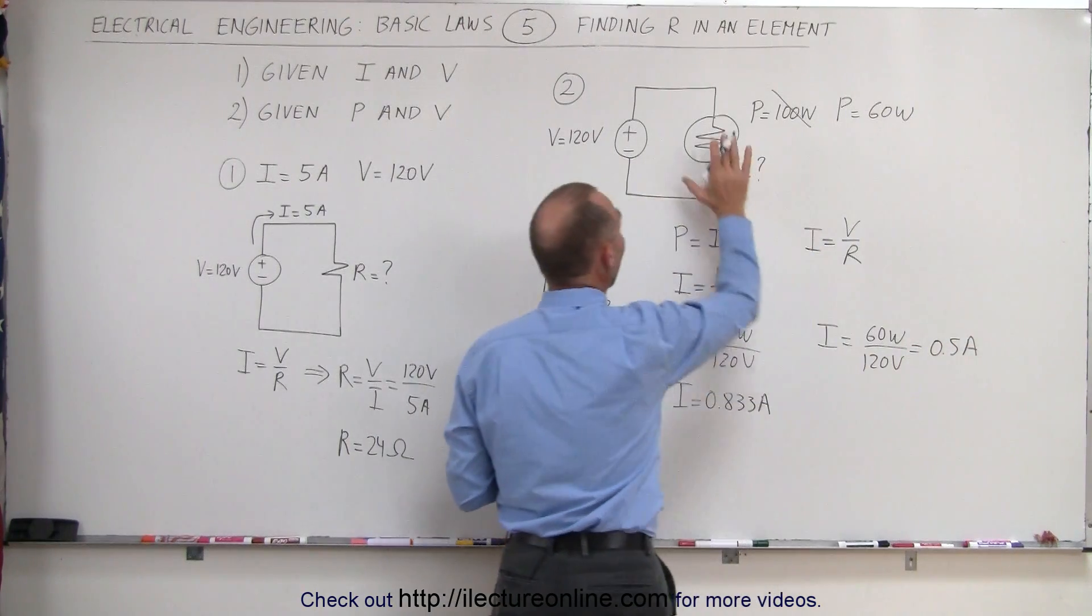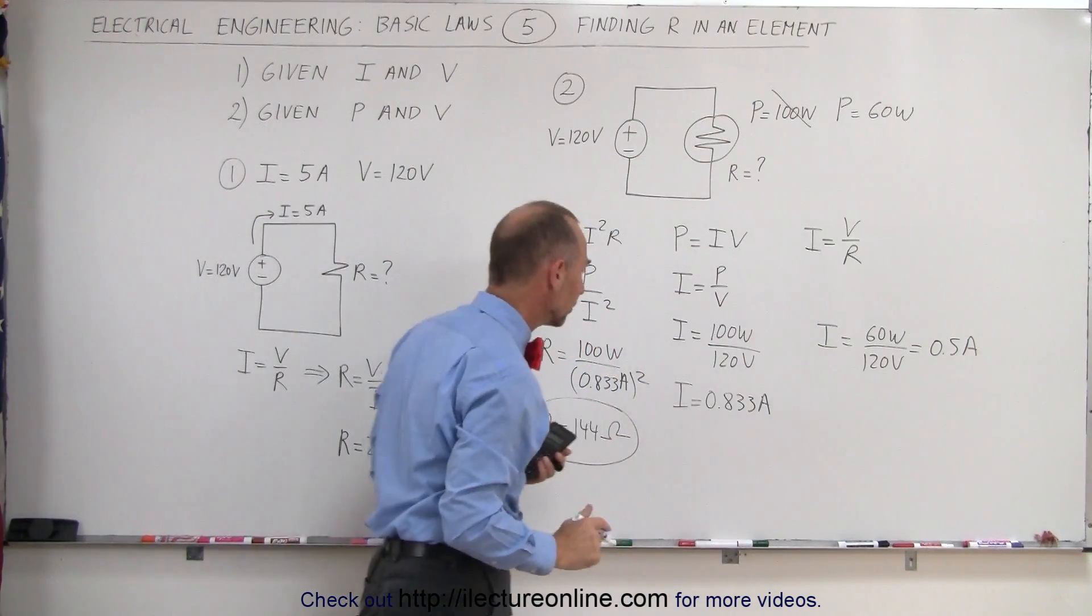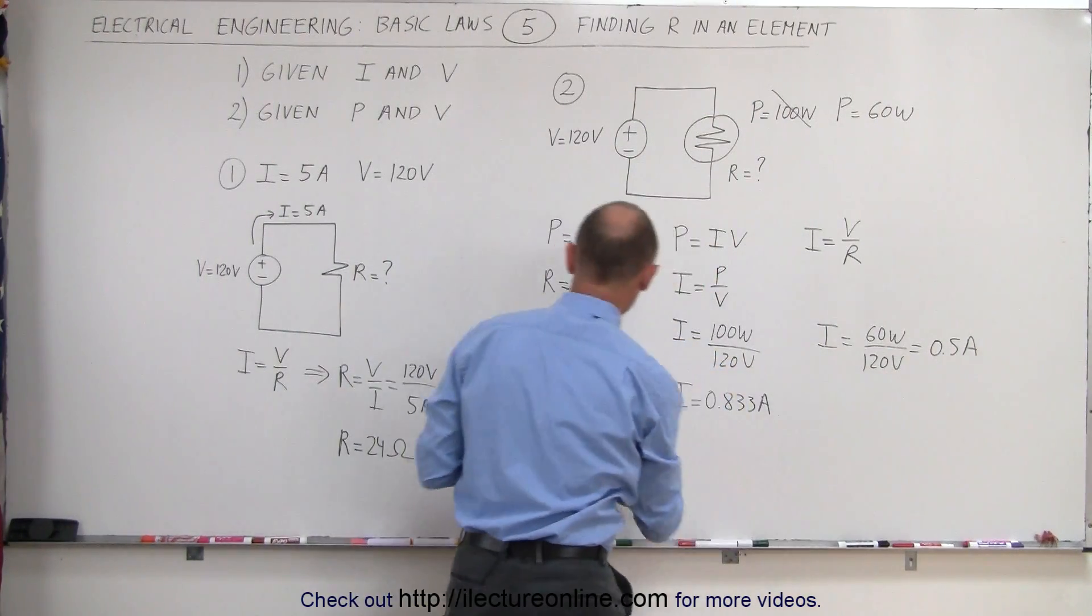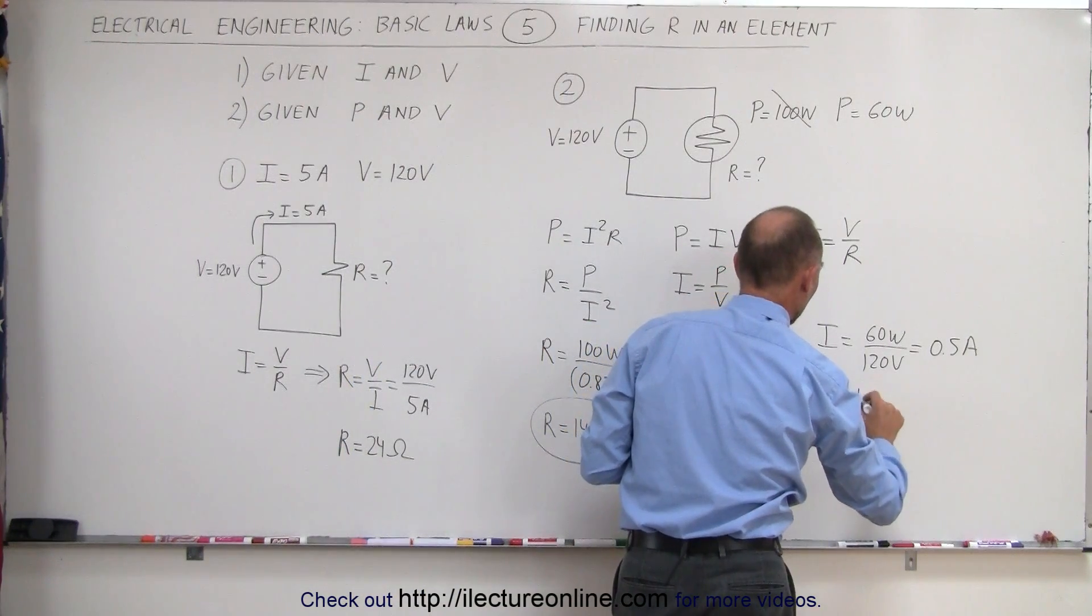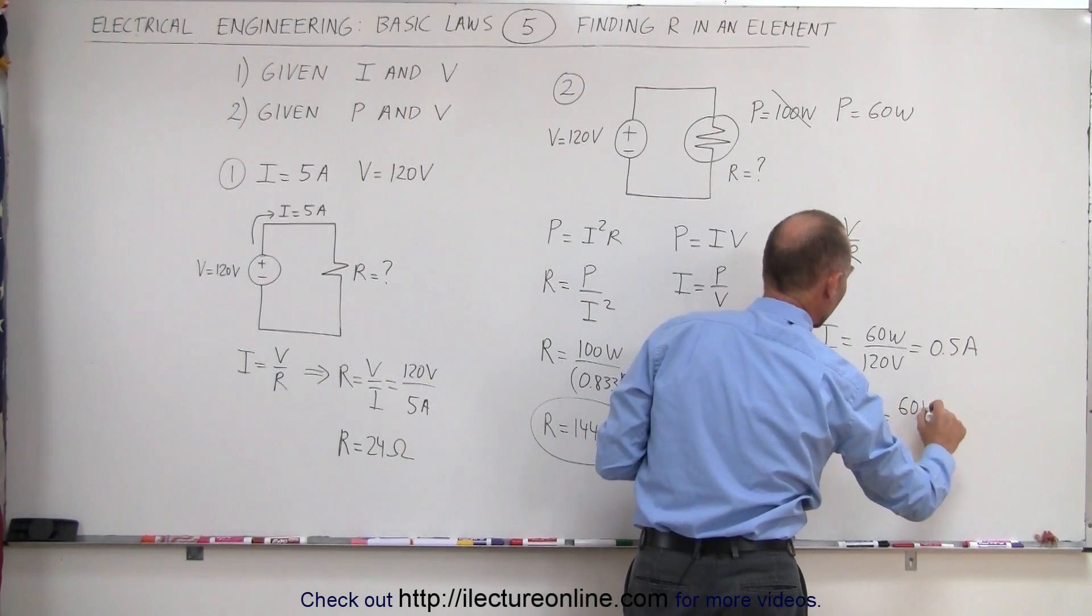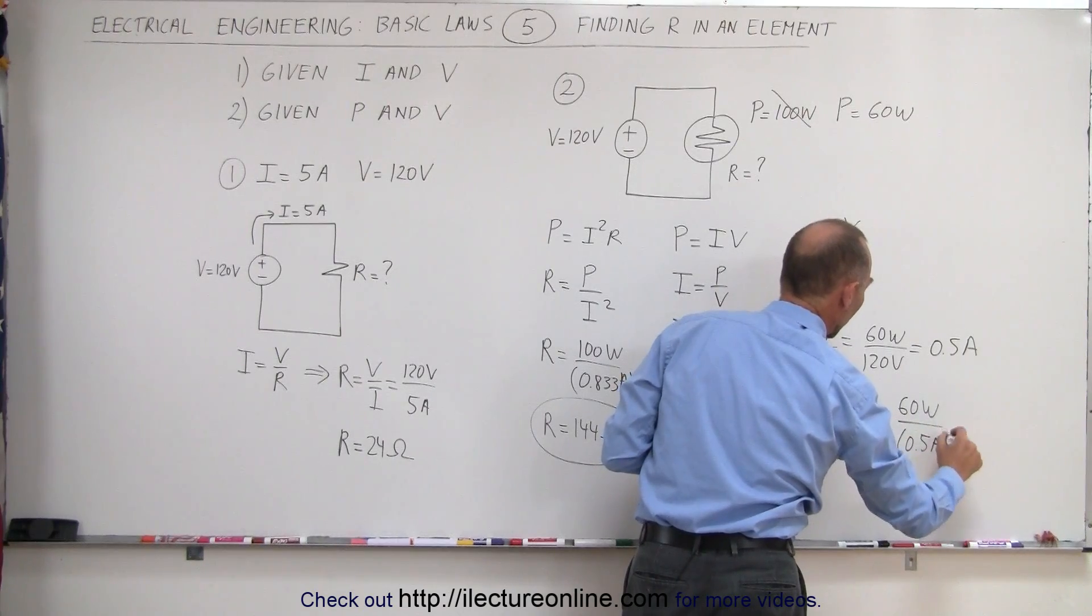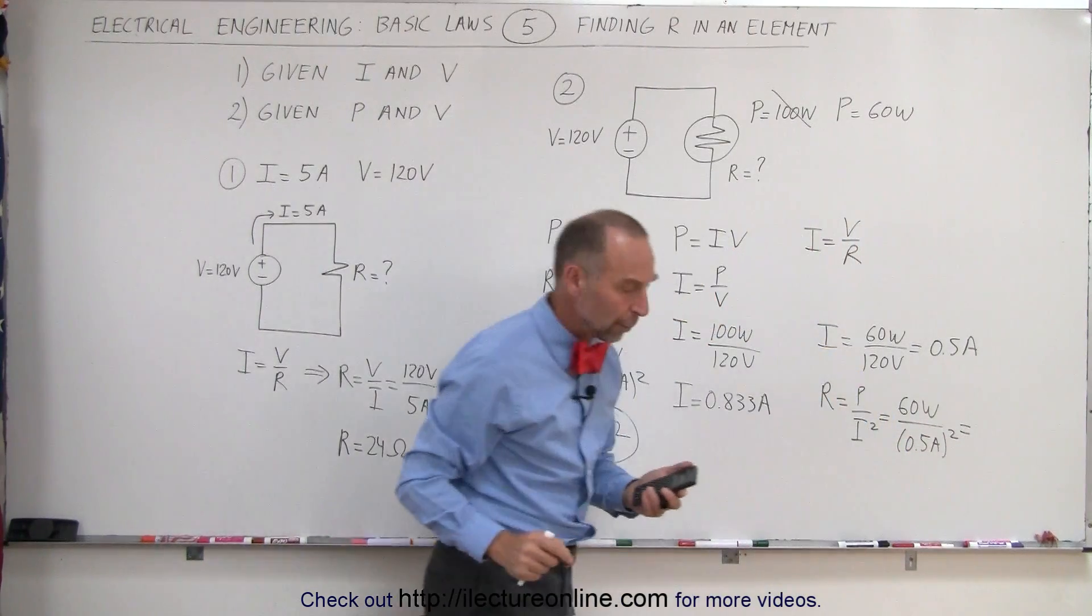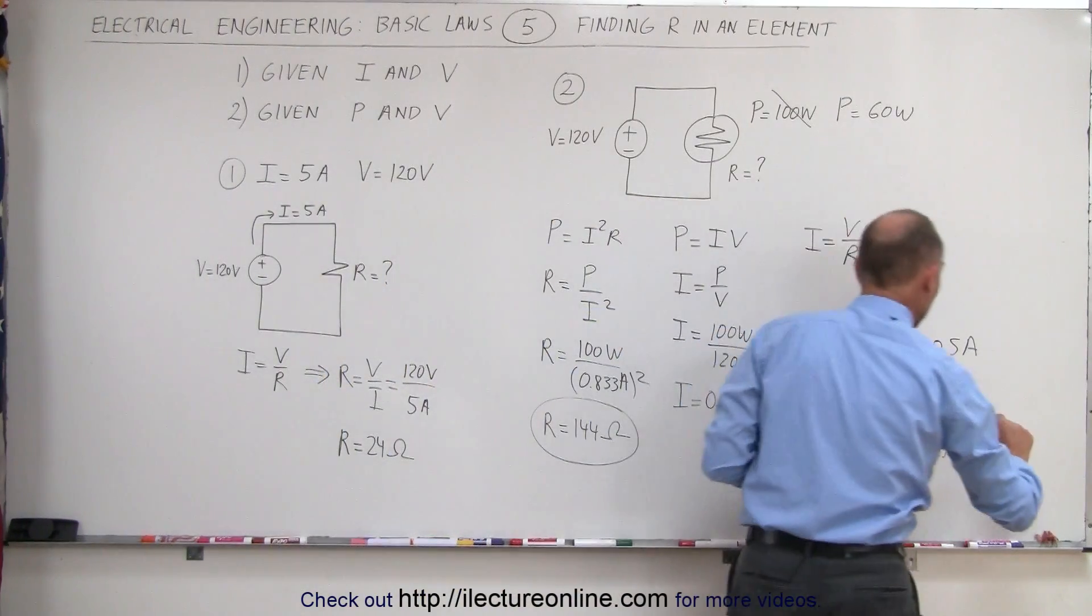So we only would have a half amp being drawn from the voltage source by a 60 watt light bulb. We then plug that into our resistance equals power divided by I squared equation. The power is 60 watts, and the current squared would be 0.5 amps quantity squared. So now we have 60 divided by 0.25, which is 240 ohms.